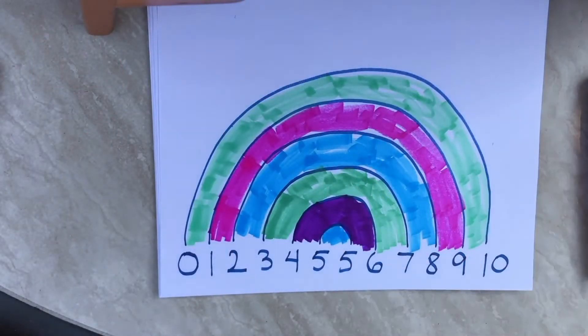I'm going to show you how to make a math rainbow that teaches the pairs that add up to ten, like two and eight, five and five, and so on.